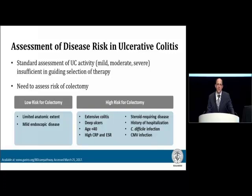The AGA has developed some care pathways that I would refer you to, and in those care pathways they define disease risk in both ulcerative colitis and in Crohn's disease. I would encourage you to start doing so routinely in your practice. What this means is assessing not only the patient's activity of disease, or how sick they are as they sit in front of you, but also understanding what their prognosis may be.